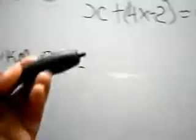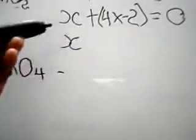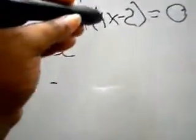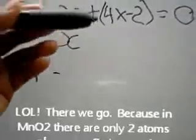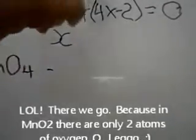And all that is equal to zero. So we're gonna say X plus four times negative two is negative eight. Sorry, it's two...